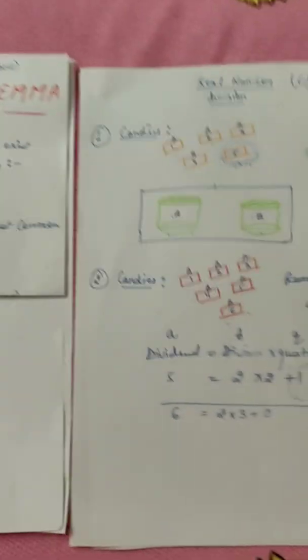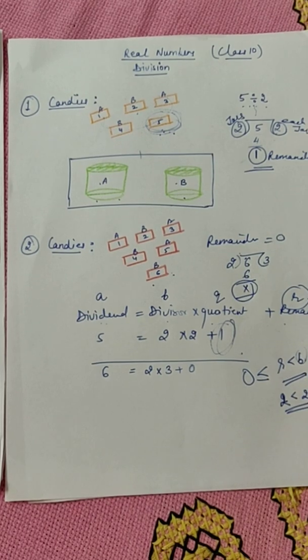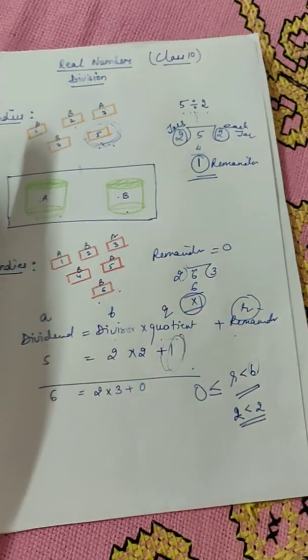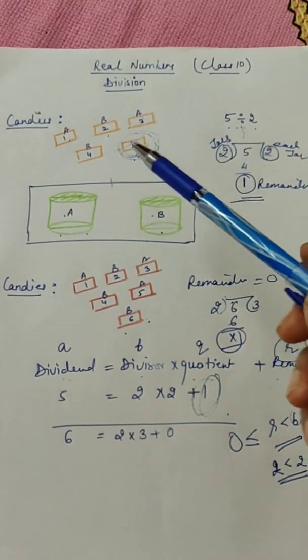So before that I am going to just discuss quickly about division. What is division? Like I have taken two boxes A and B and I have taken five candies. So I have to divide these candies in two boxes equally. So how are we going to divide?